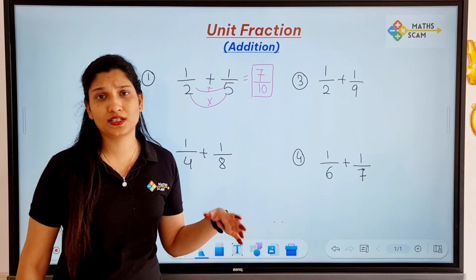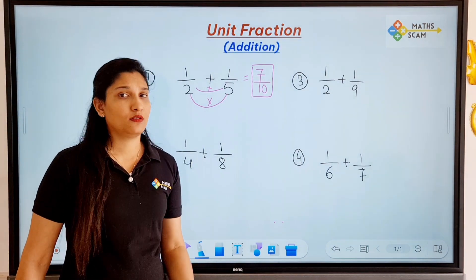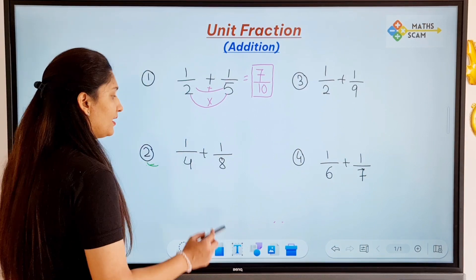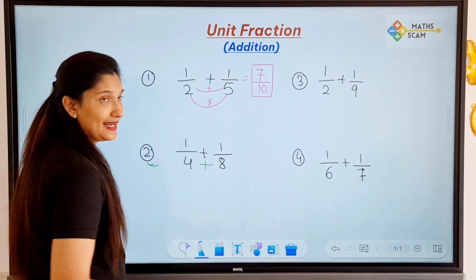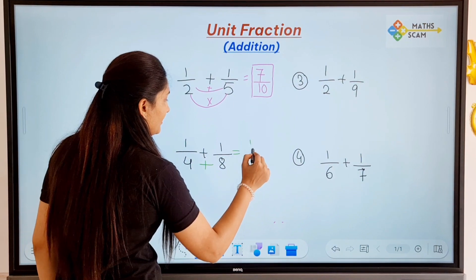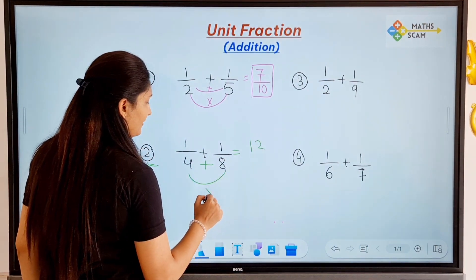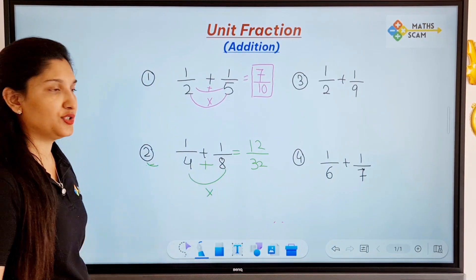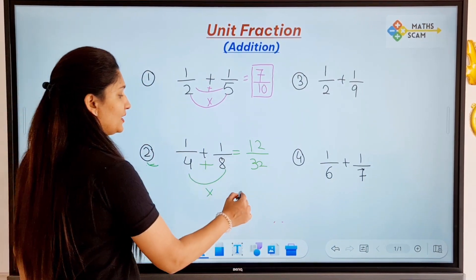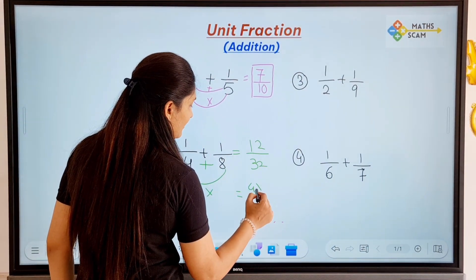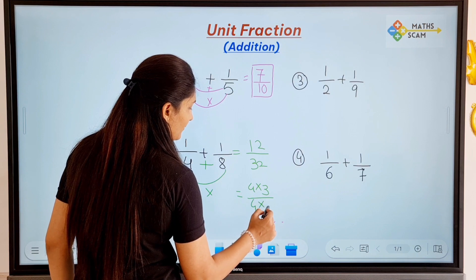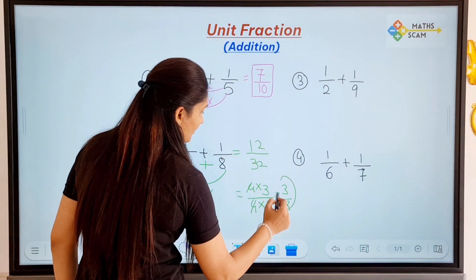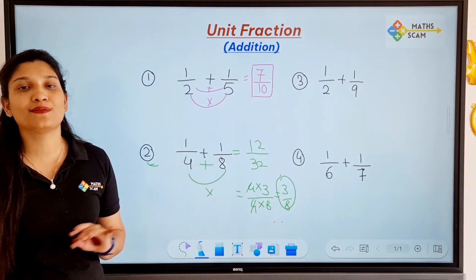So for the second question, we can use the same method. First do addition: 8 plus 4 is 12. Then do the multiplication: 8 fours are 32. You can simplify: 4 threes are 12 and 4 eights are 32, so cancelling the 4, the answer is 3 by 8.